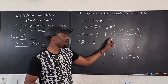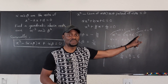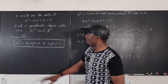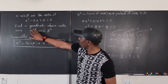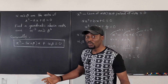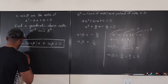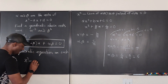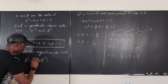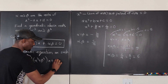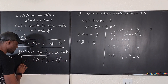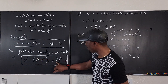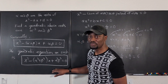So now, what quadratic equation will have alpha cubed and beta cubed as its roots? We can just write it. The quadratic equation we're looking for is x squared minus (alpha cubed plus beta cubed) times x plus (alpha cubed times beta cubed) equals zero. Our job is to find the value of alpha cubed plus beta cubed and also the value of alpha cubed beta cubed.